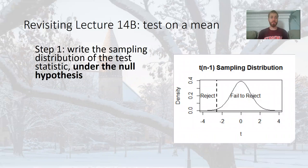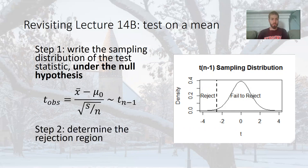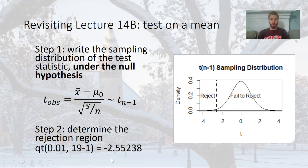Our next step is to write the sampling distribution of the test statistic under the null hypothesis. Remember the variance is assumed unknown — that's the assumption we'll make when actually conducting the test. So we'll use a t(n-1) distribution, since the data are also assumed to be normally distributed. Step two is to determine the rejection region. My alternative is less than, so I need qt(0.01) with 18 degrees of freedom at alpha equals 0.01. That vertical dashed line is at negative 2.55. If our t-observed falls in that region, we'll reject; if it falls to the right, we'll fail to reject.